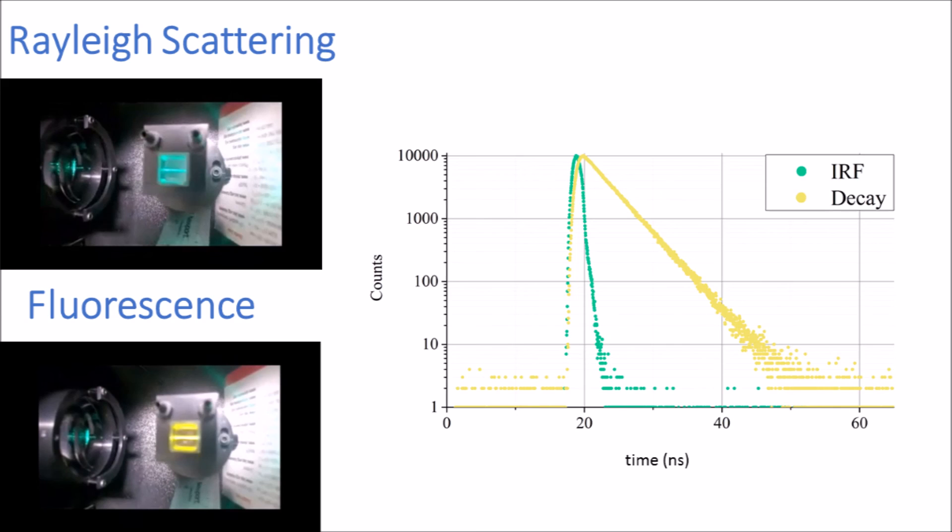The fluorescence lifetime is a very sensitive parameter. It may be used to detect changes in the local chemical environment of the Rhodamine 6G dye in this case, and such measurements are carried out routinely within the life sciences.